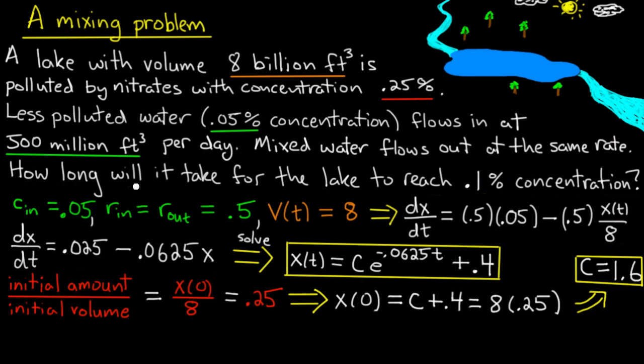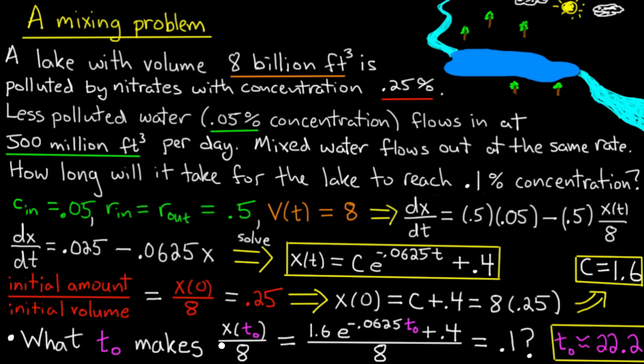We're now ready to answer the original question that the problem asked. And that is, how long will it take for the lake to reach 0.1% concentration of pollutant? Well what is this asking? Well it's asking for a time. Let's call that time t_0. And it's asking for what time t_0 makes the concentration equal to 0.1. Now what's the concentration? Well it's the total amount divided by the volume of the lake. And so I want to know what t_0 makes x(t_0) divided by 8 equal to 0.1.